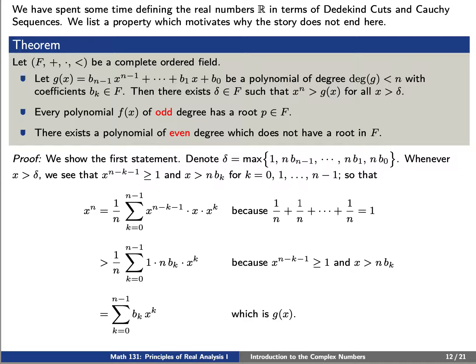Let's assume now that x is greater than this delta. Because delta is greater than 1, then x to the n minus k minus 1 is greater than or equal to 1, for k being 0, 1, through n minus 1.